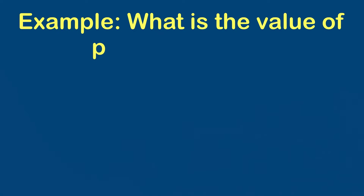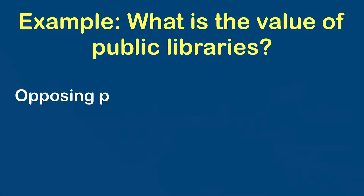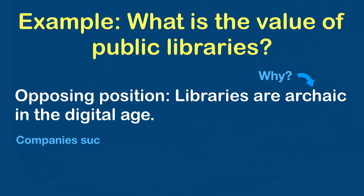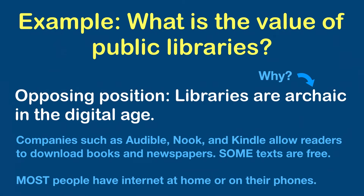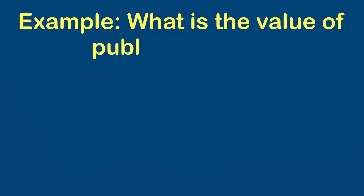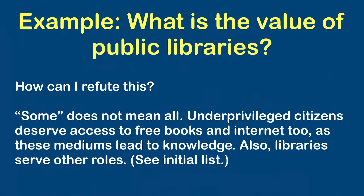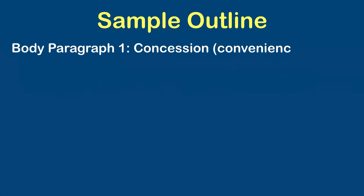The next step is to figure out the opposition. What would other people say if they don't think libraries are very valuable to society? They might say that libraries are outdated, probably because of the abundance of e-readers and the internet — a lot of people have access to books and newspapers anyway, so they might not need to go to the library. I wrote the words SOME and MOST in all caps to signal that I'd use those as part of my refutation. Basically, the idea is that not everyone has internet access and not everyone can afford the luxury of audiobooks or online newspaper subscriptions. Now that I've figured out my position, my concession, and my refutation, I need to figure out how to organize my essay.